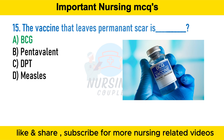BCG is the only vaccine against tuberculosis. It is given as a single intradermal injection at the insertion of the deltoid muscle. The BCG vaccine contains live attenuated Mycobacterium bovis, and following intradermal injection it elicits a local immune response. This response most often results in an ulcer that heals over weeks and leaves a flat permanent scar at the injection site.